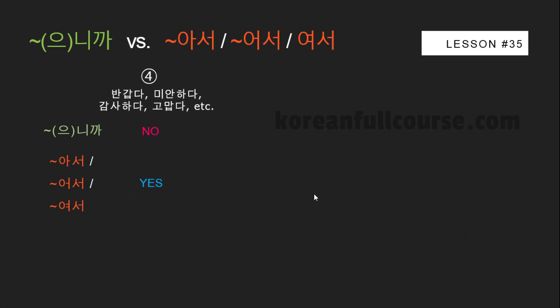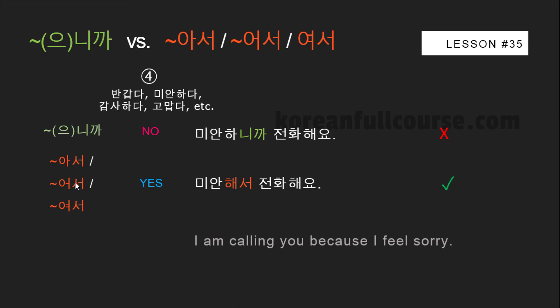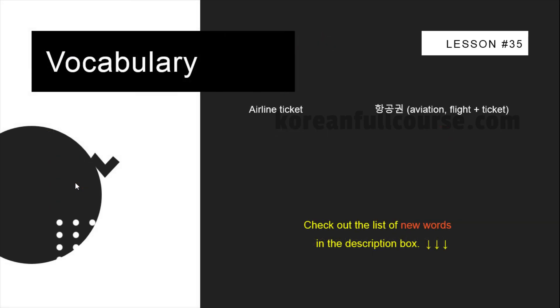And lastly, with emotional words such as 'to be glad,' 'to be sorry,' and 'to be thankful,' use 아서/어서/여서. For example: 'I'm calling you because I feel sorry' — '미안해서 전화해요.' Don't say '미안하니까 전화해요.' And this is the only new vocabulary word for the next lesson: airline ticket. 항공 means aviation or flight, and 권 means ticket.